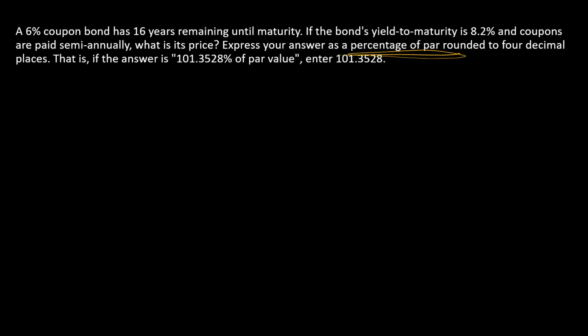The easiest way to think about this is to just rewrite everything from the beginning as if par were $100 instead of $1,000. And so what that is going to do, it's going to scale down your FV. It's also going to scale down your coupon amount, and then everything else will work itself out.